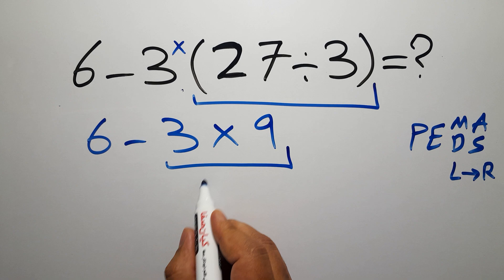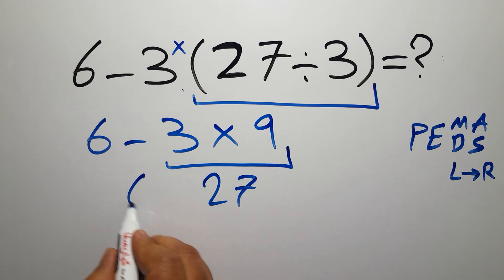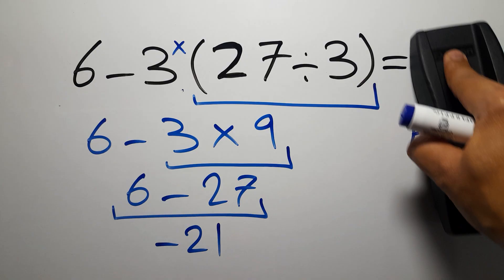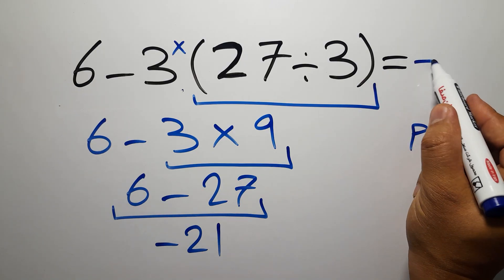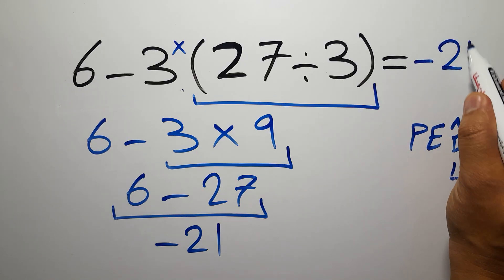So 6 minus 27, which equals negative 21, and this is our final answer to this problem. The correct answer is negative 21.